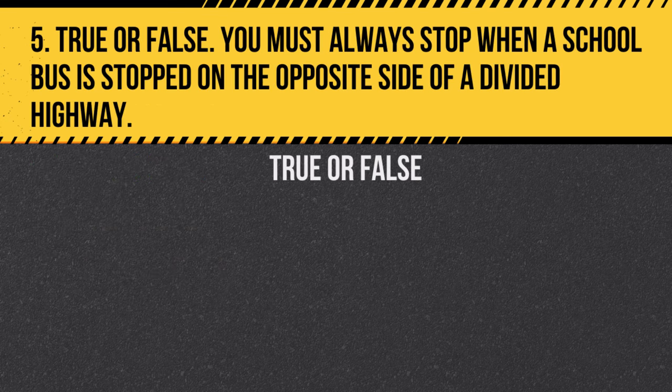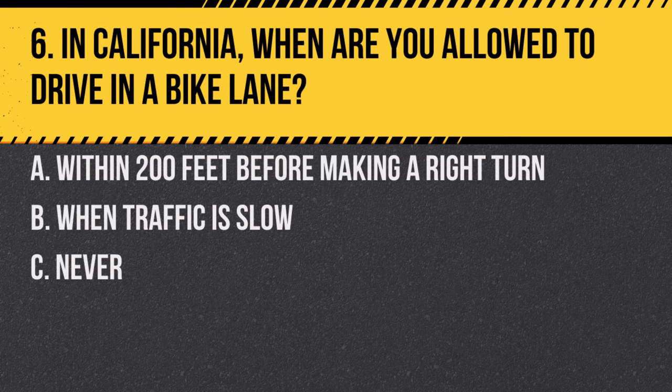Question 5. True or false: You must always stop when a school bus is stopped on the opposite side of a divided highway. Answer: False. On a divided highway with two or more lanes in each direction, you do not need to stop if you are on the opposite side of the bus.